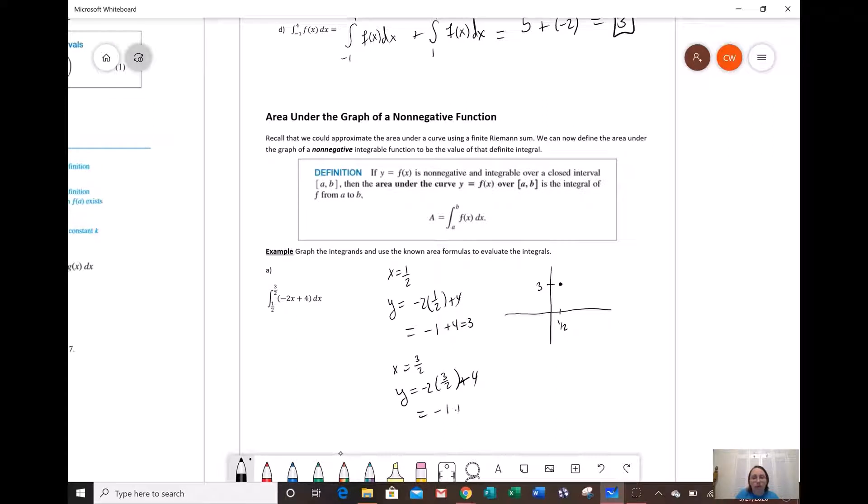And the other one, if x is 3 halves, then y is negative 2 times 3 halves plus 4. Or negative 3 plus 4, which is 1. So we go out to 3 halves, and our point is at 1. So here's our line.